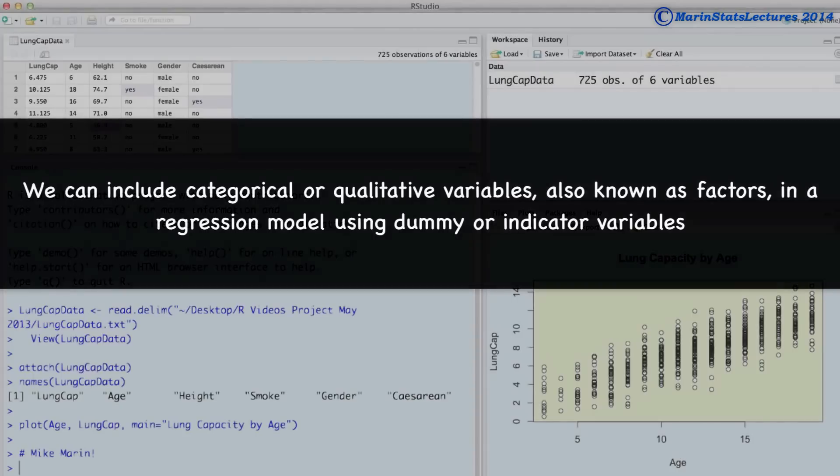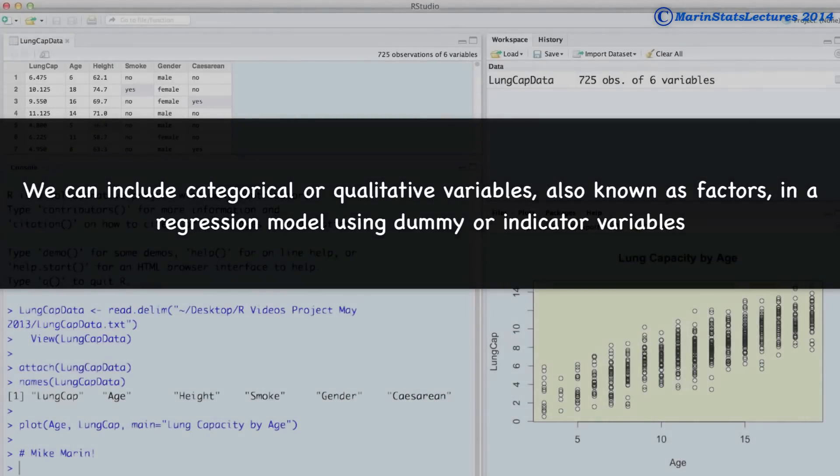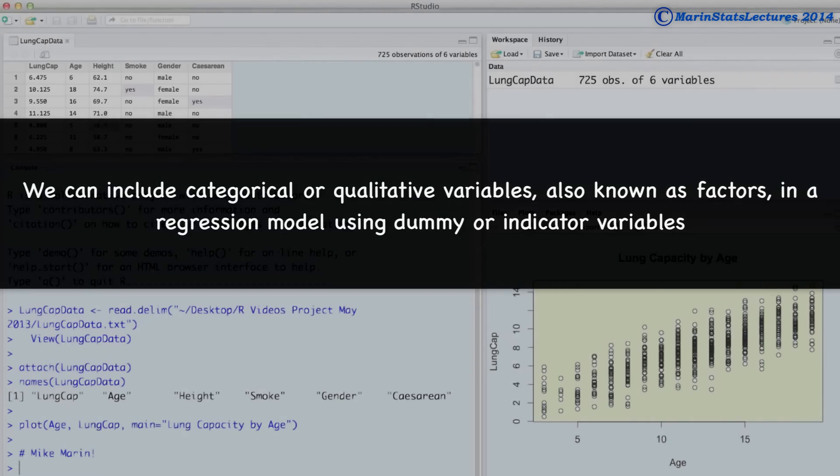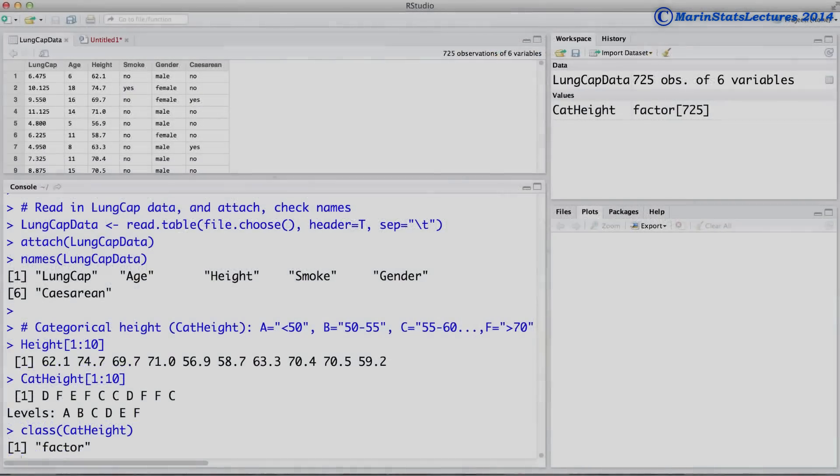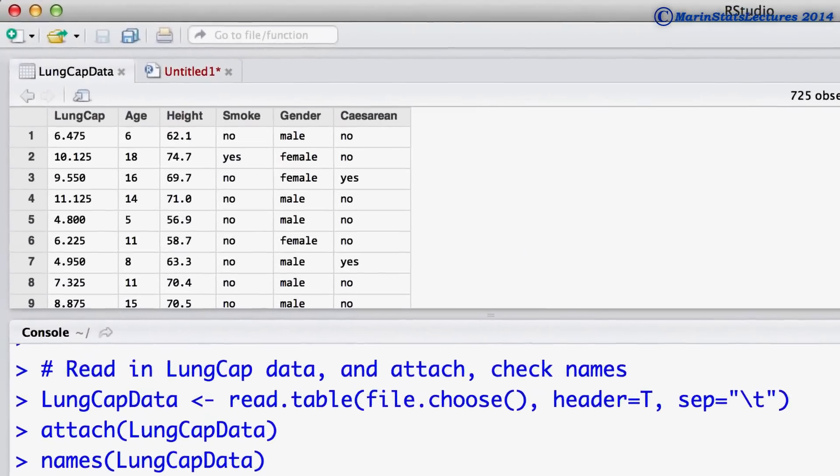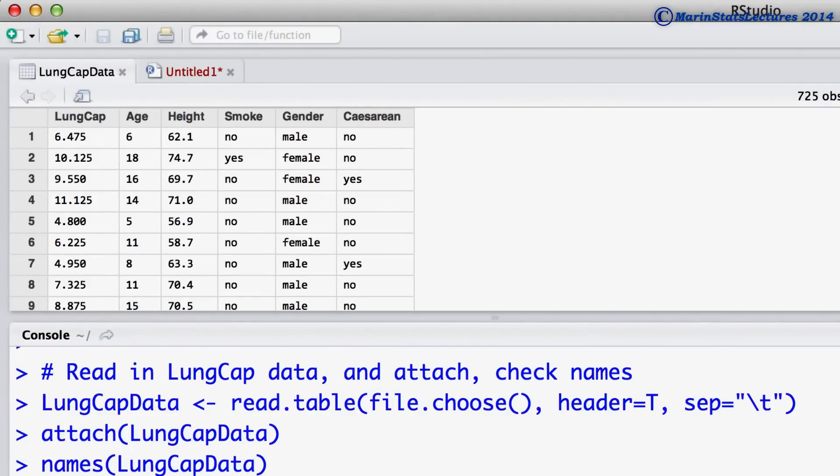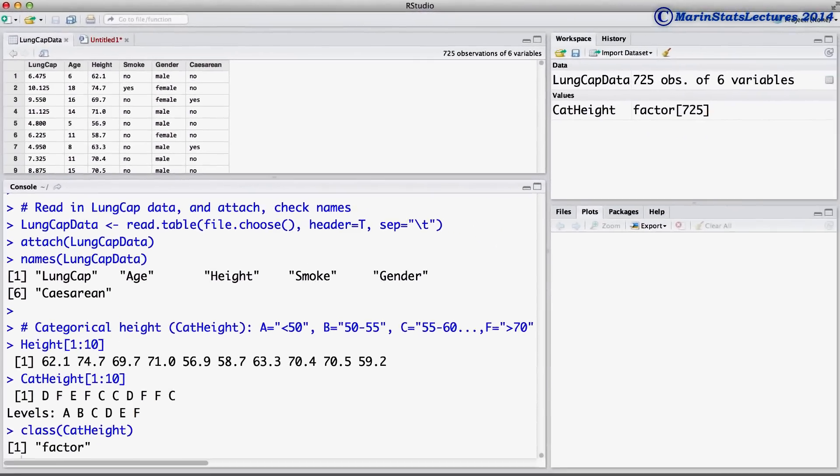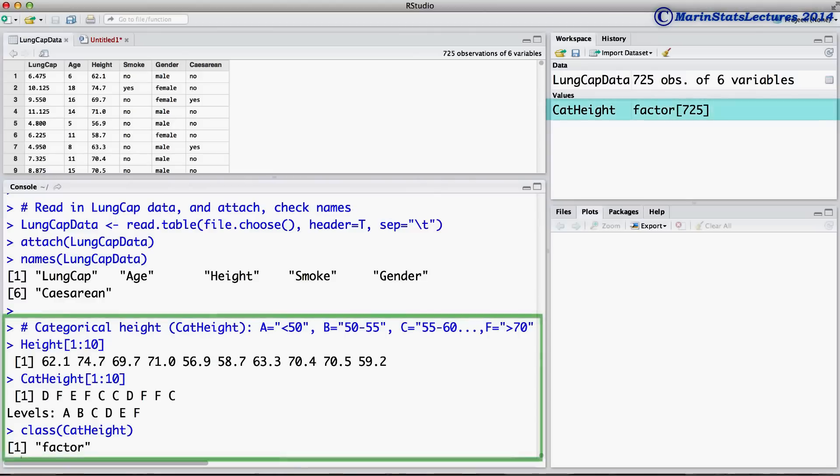We can include categorical or qualitative variables, also known as factors, in a regression model using dummy or indicator variables. We'll be working with the lung capacity data that was introduced earlier in this series. I've already imported the data into R and attached it, and I've created a categorical representation of the height variable.